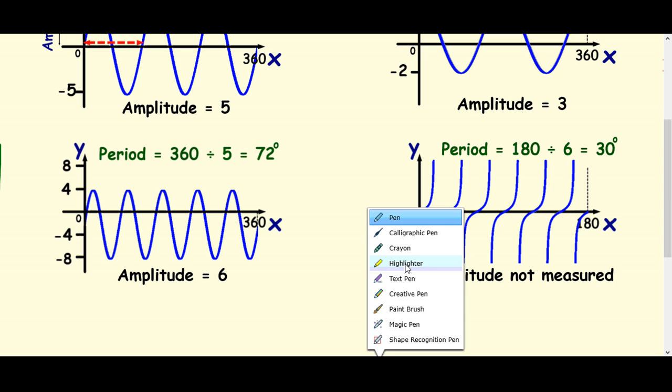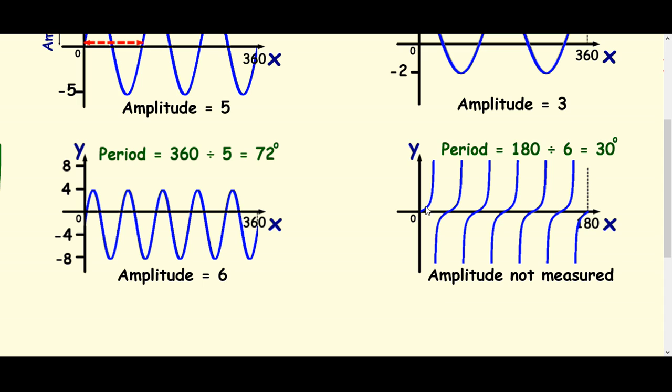Okay, so remember, a tan graph goes up and then up like that. That's one full cycle. So it goes to there if you like.